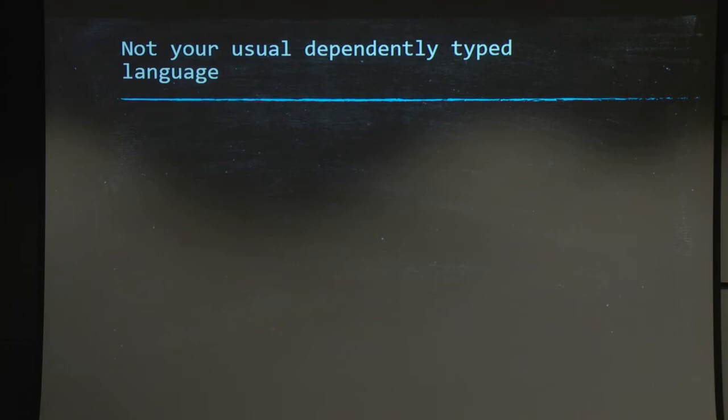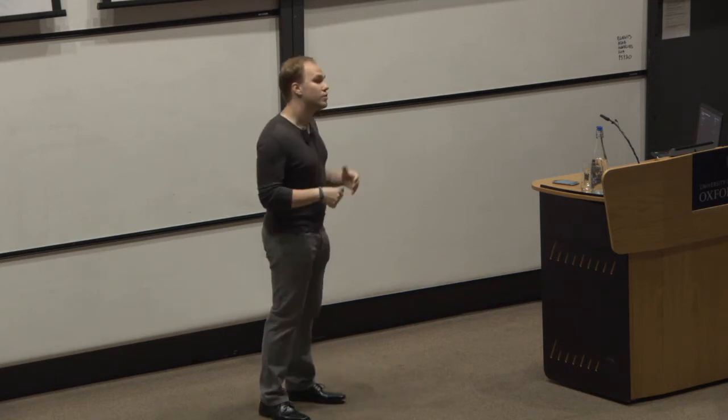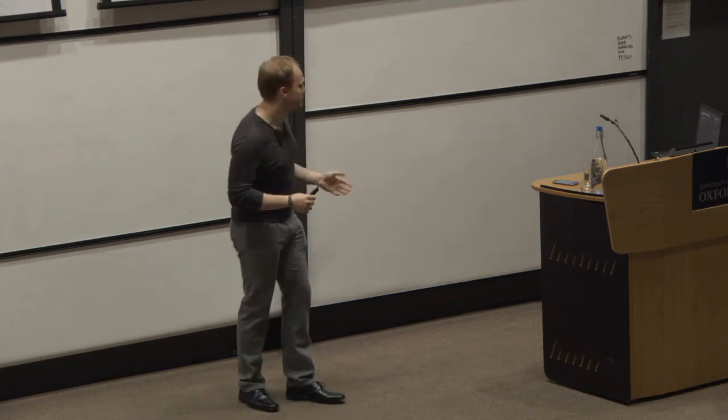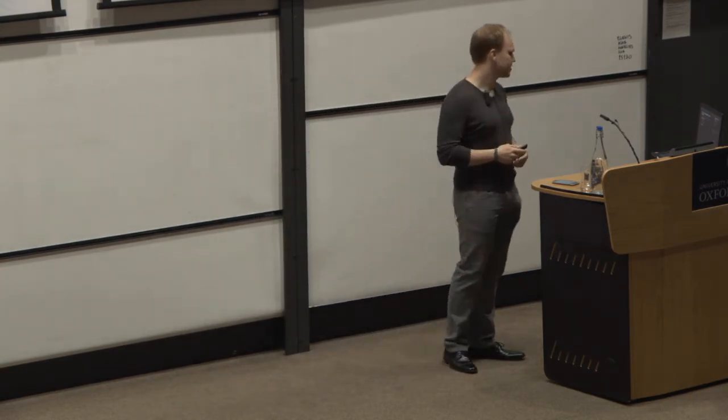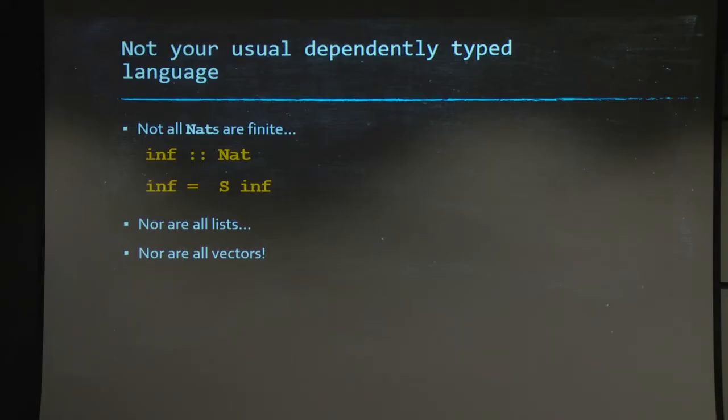Let's just have a look at some code where dependent Haskell might differ from other theory you may know. You might remember that in Haskell, you can write infinite natural numbers, like inf. Inf is just its own successor. You can also write some infinite lists in pretty much the same way. And this is important, because there's many programming techniques that are based on infinite lists in Haskell. Well, the same way that you want to have infinite lists, you may want to have infinite vectors.